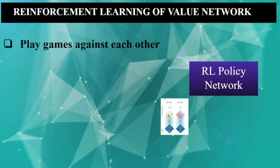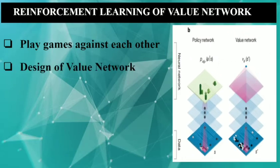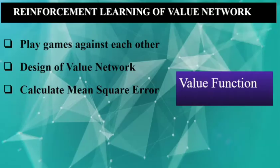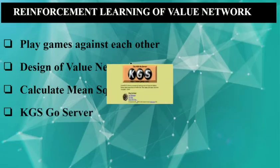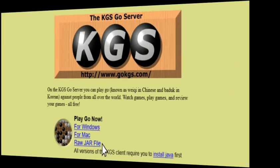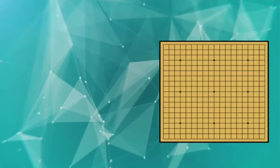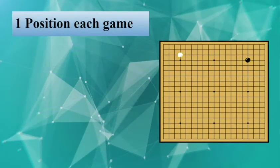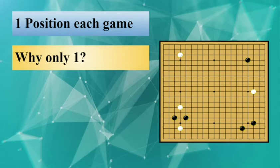The design of the value network is very similar to the Policy Network, except that it outputs a scalar value instead of a probability distribution. Let our game result of winning or losing be Z. We compute the mean square error (MSE) of our value function V. We play more than 30 million games and collect only one position from each game for our training dataset. You might be thinking — why only one move? Shouldn't we take more than one for better results?